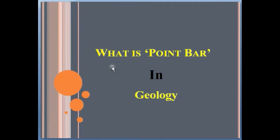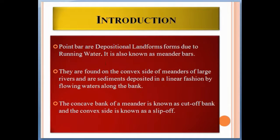Today we talk about what is a point bar in geology. Point bars are depositional landforms formed due to running water. They are also known as meander bars. They are found on the convex side of meanders of large rivers, and sediments are deposited in a linear fashion by flowing waters along the bank.